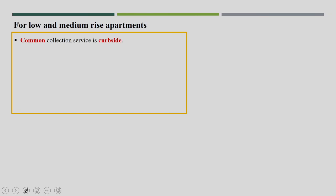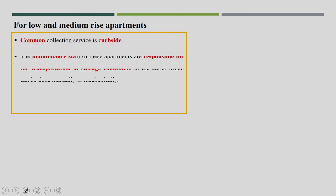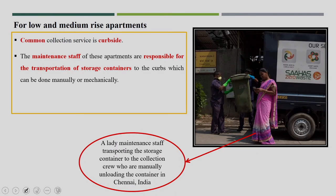For low-rise buildings and low-rise detached apartments, that was the collection service discussion. For low and medium-rise apartments, curbside service is common. The maintenance staff of these apartments are responsible for transporting waste to the storage location and from the storage location to the curb. You can see one photograph of a maintenance staff lady transporting waste from the storage container to the collection crew, who are manually unloading the waste into the vehicle.